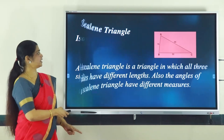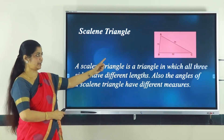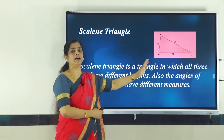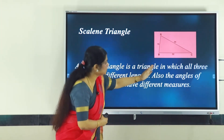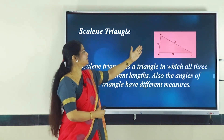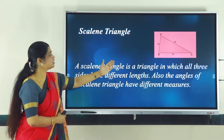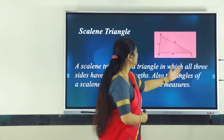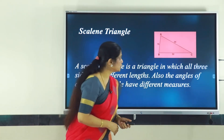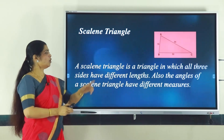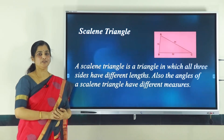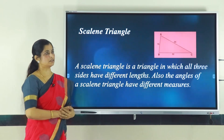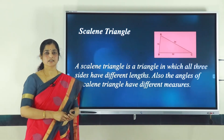The next type is the scalene triangle. In a scalene triangle, all three sides have different measures. In the figure, you can see that AB measures 15, BC measures 32 and AC measures 34 centimeters. All three sides have different measurements, so such a triangle is called a scalene triangle.